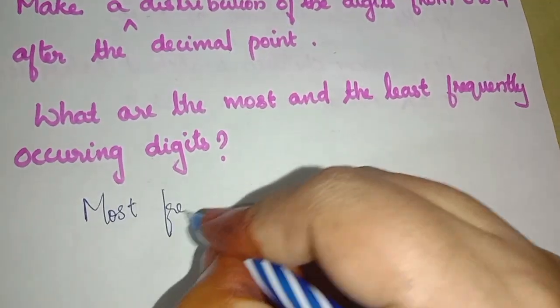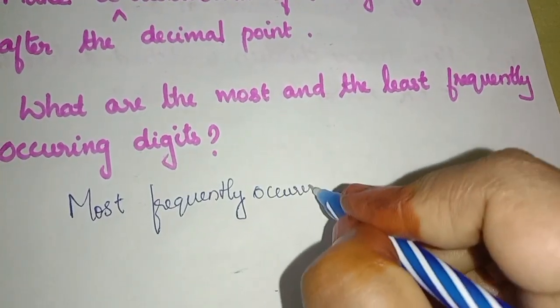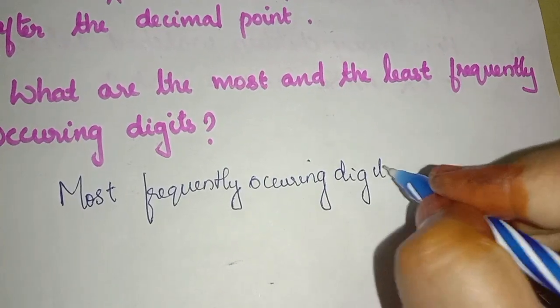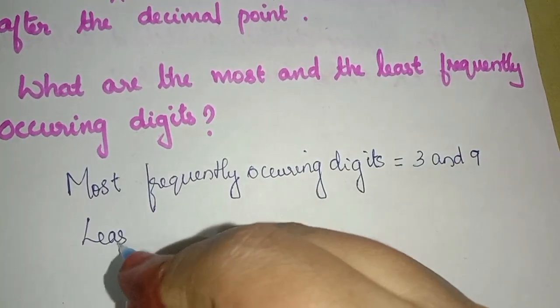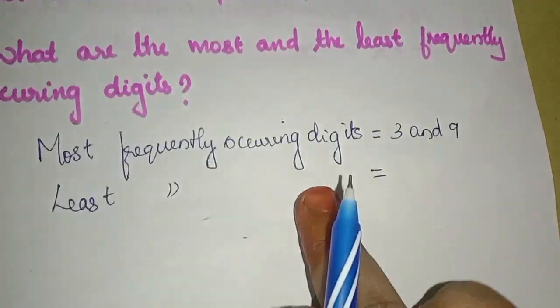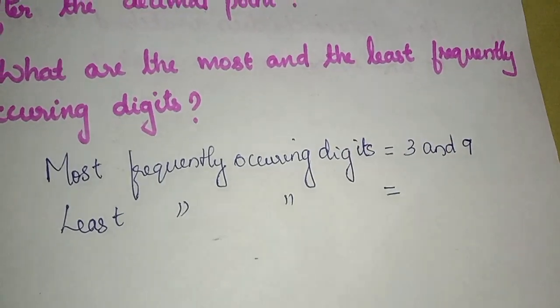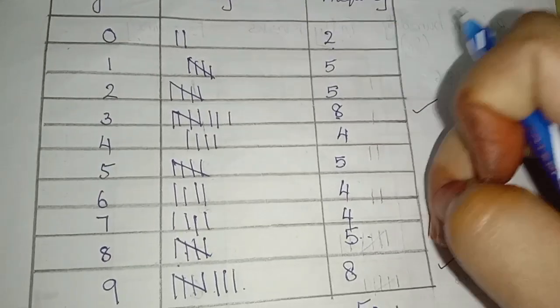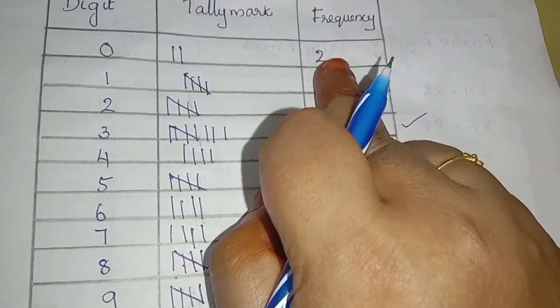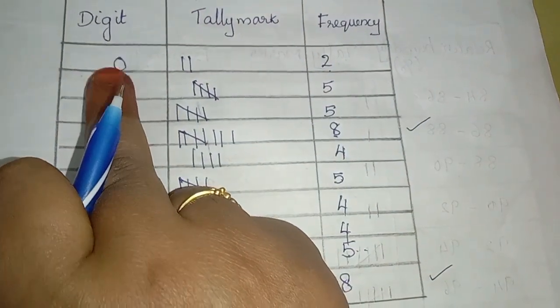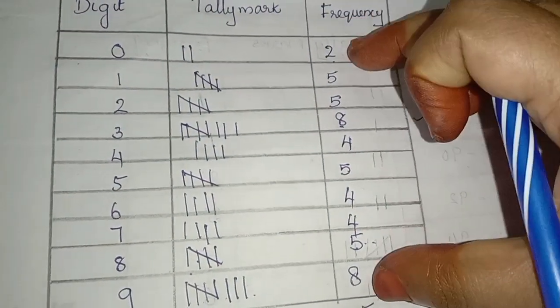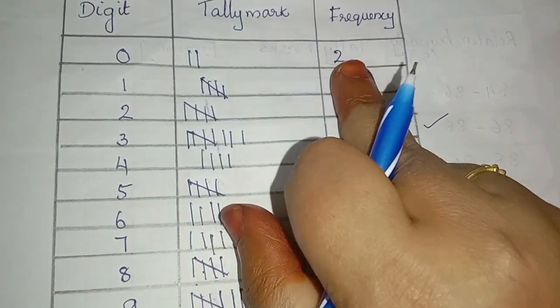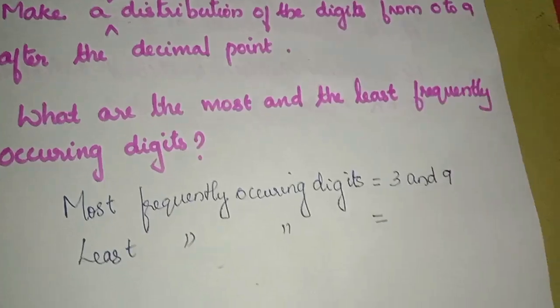Most frequently occurring digit is equal to 3 and 9. The least frequently occurring digit — I think we have a little more than this. 2 is not the minimum, but we have a little bit more. That means we have 0, so the answer is 0 — the least frequently occurring digit is 0.